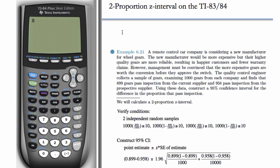So whenever we're carrying out an inference procedure, we're going to start with STAT TESTS. And here, because we have proportions, and we have two of them, we're going to go to 2-Prop ZInt, for interval.